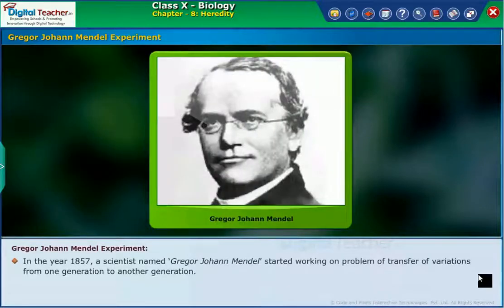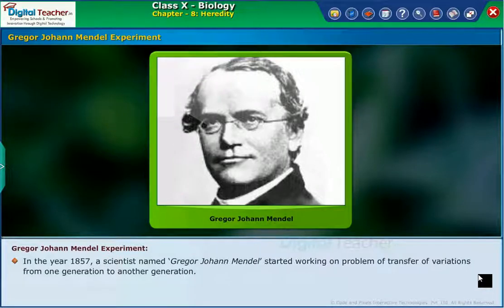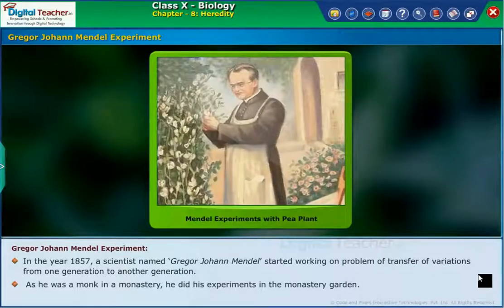In the year 1857, a scientist named Gregor Mendel started working on the problem of transfer of variations from one generation to another generation. As he was a monk in a monastery, he did his experiments in the monastery garden.